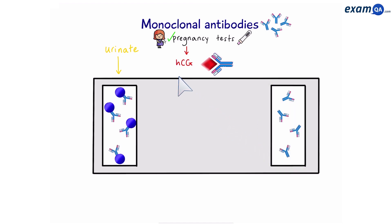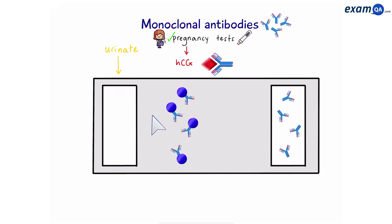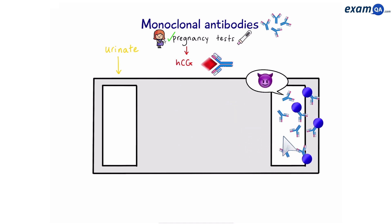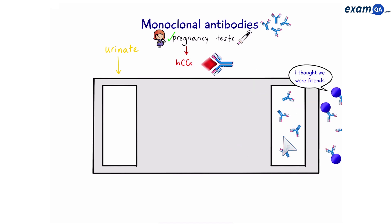However, if the lady is not pregnant, when she urinates there will be no hormones present. This time, the antibodies and the blue beads will travel alone. Since there is no hormone, the fixed antibodies will not bind to them. As a result, the blue beads will fall off and the area will not go blue.